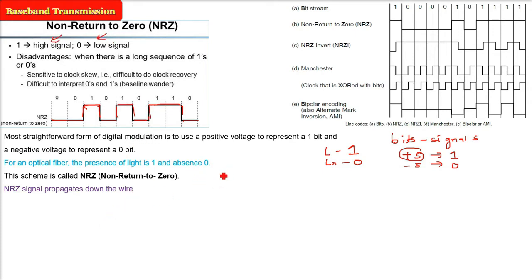Now, the problem, because every scheme has some downside. Because we are discussing about not only the sender, the receiver also has to receive. Same bit sequence has to be received. So, how about sending lot of 0s, lot of 1s. This problem persists. So, it is difficult to interpret 0s and 1s, which is called as a baseline wander.